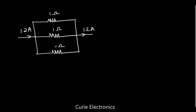By looking at this circuit and with logical thinking, we can say the current flowing through each one-ohm resistor is 4 amps — so 12 amps of current is divided equally between the three resistors. But what happens if the resistors are 1 ohm, 20 ohm, and 30 ohm? That logical thinking becomes difficult.